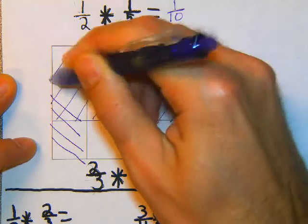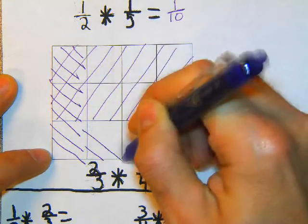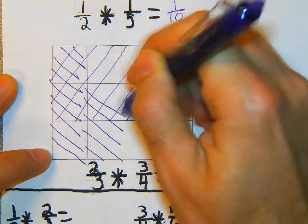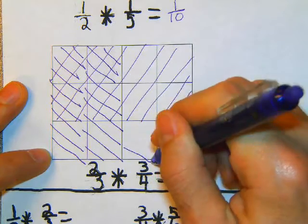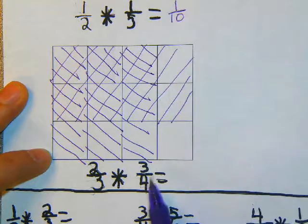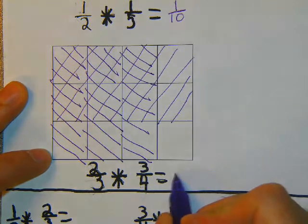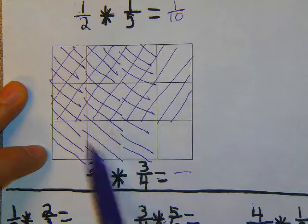Here's 1 fourth. Here's 2 fourths. And here's 3 fourths. The lines don't have to be perfect.